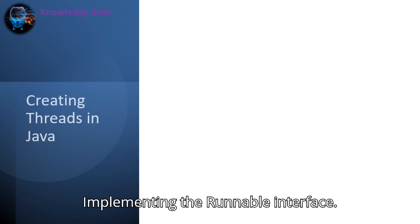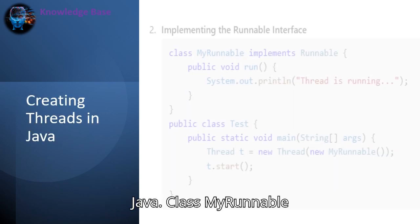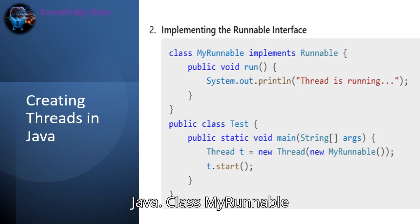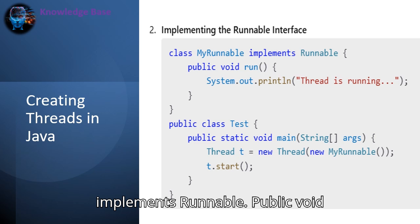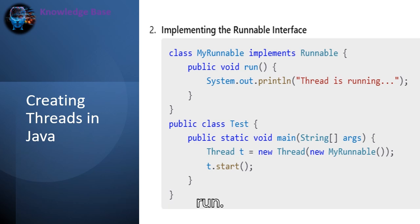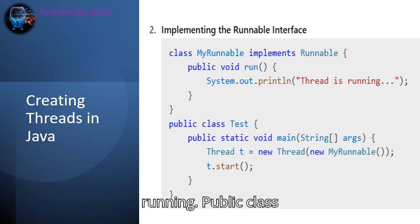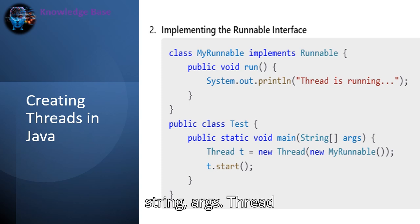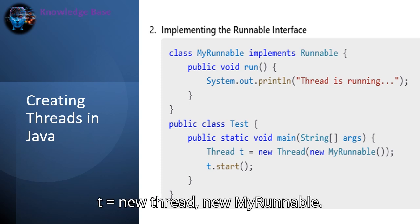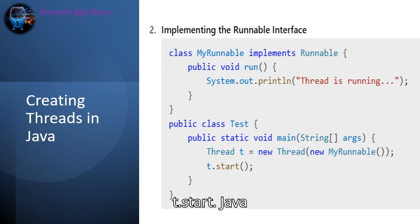2. Implementing the Runnable interface: class MyRunnable implements Runnable { public void run() { System.out.println("Thread is running"); } } public class Test { public static void main(String[] args) { Thread t = new Thread(new MyRunnable()); t.start(); } }